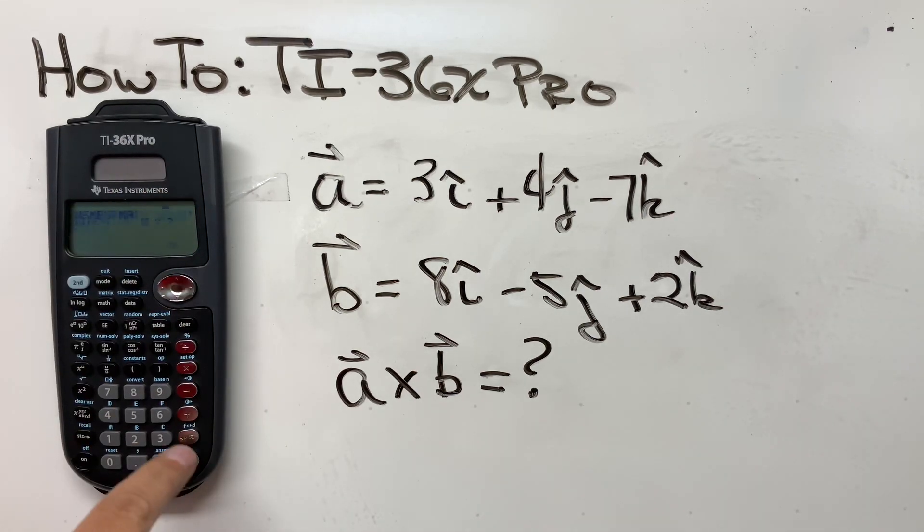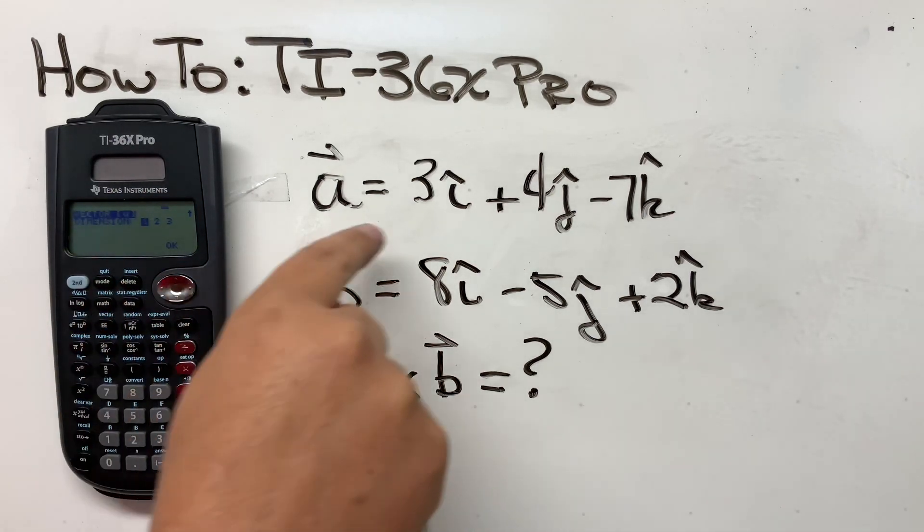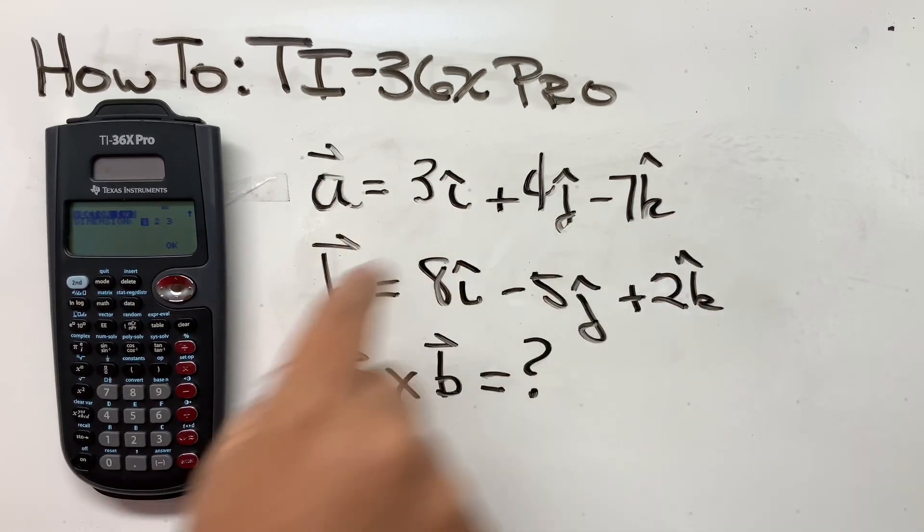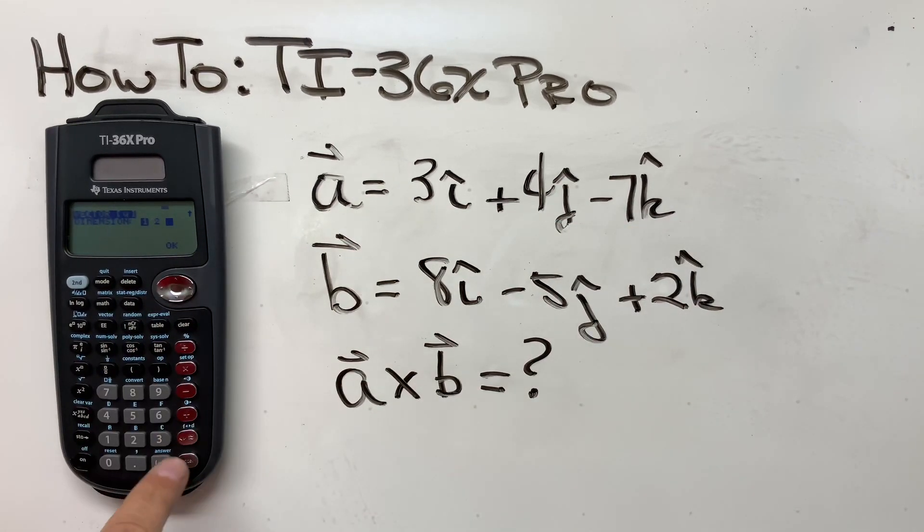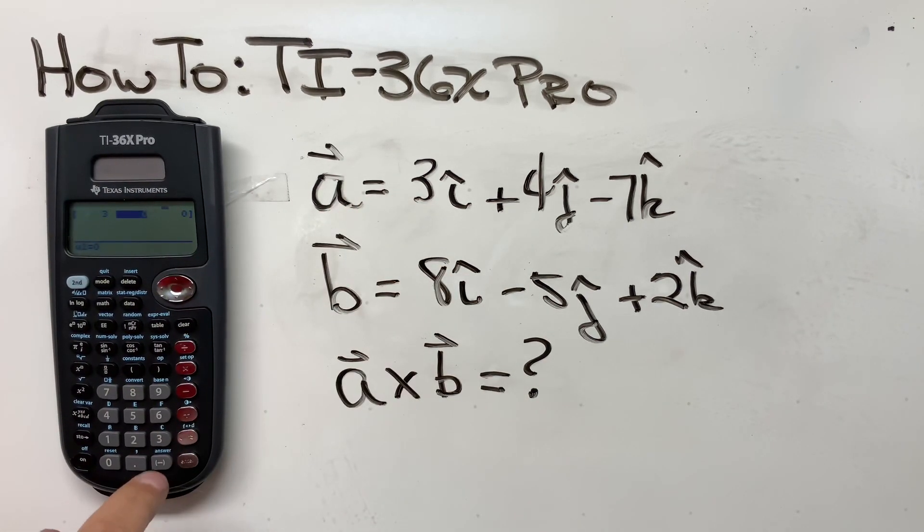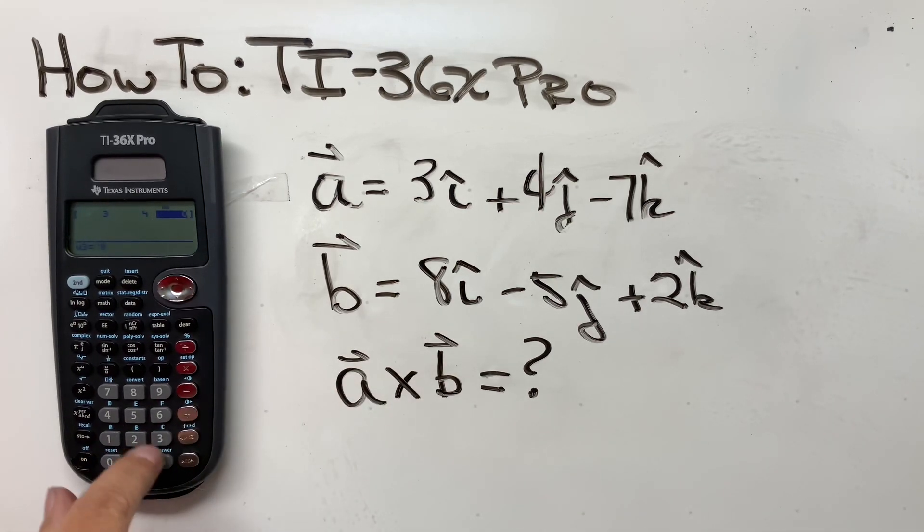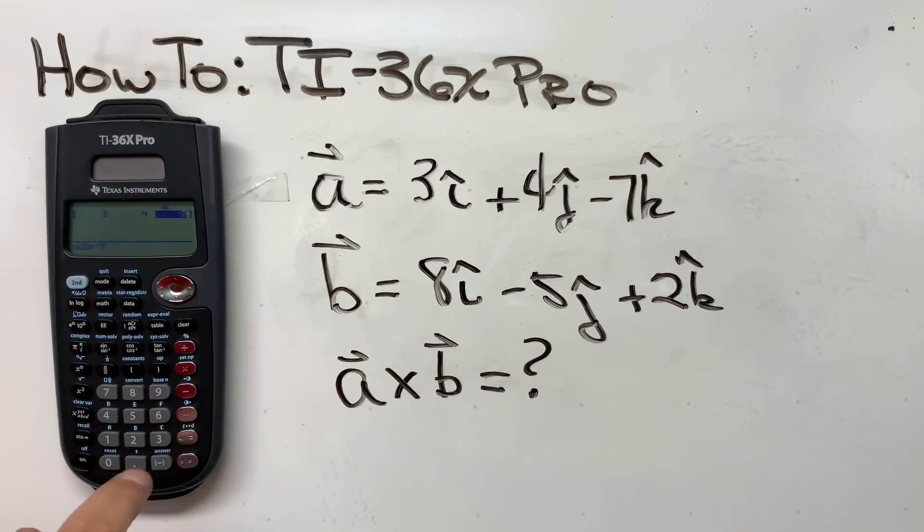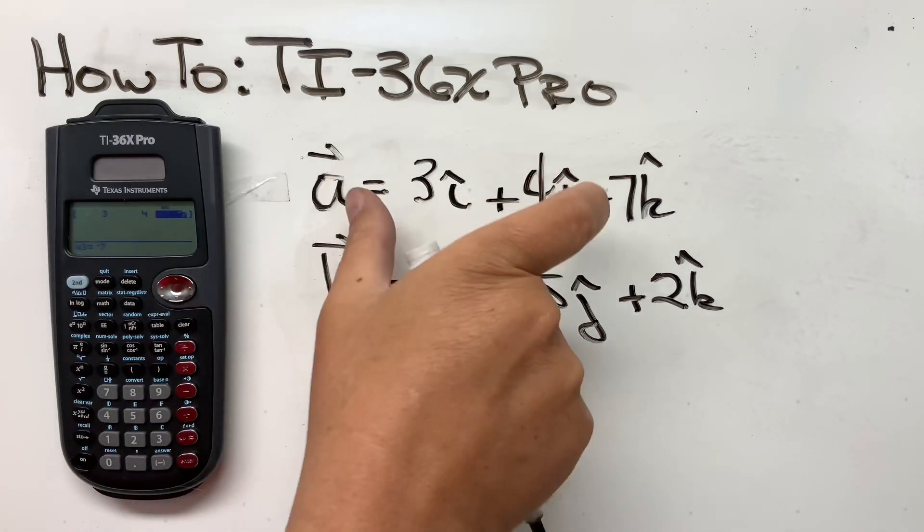So here we go. Vector U, enter. And this is a three dimension, right? X, Y, Z. So let's go over here to three, and OK, and then enter these constants in here. So we get three, enter, four, enter, and minus seven, enter. So we have the vector U in there.